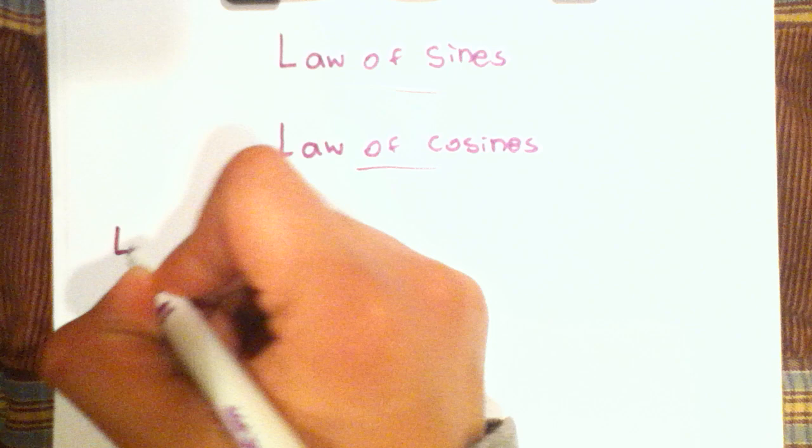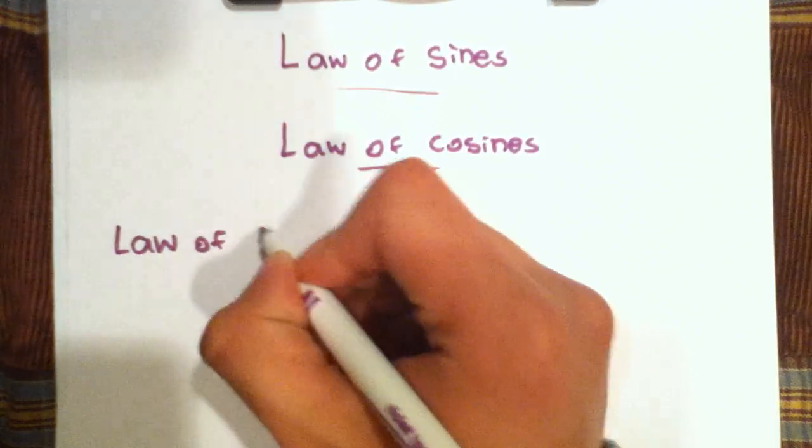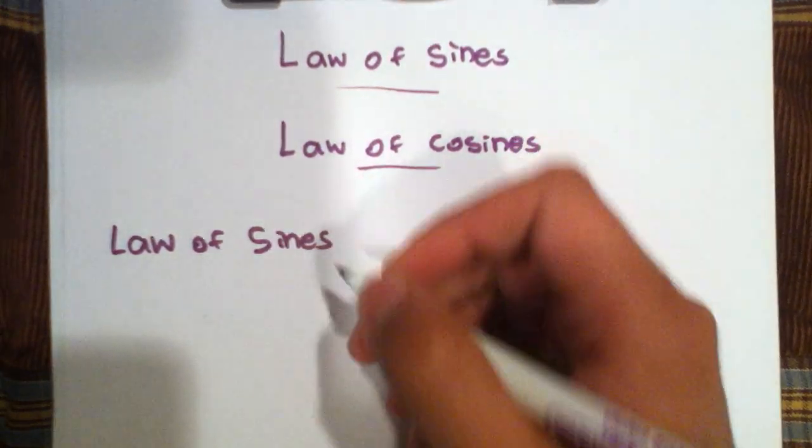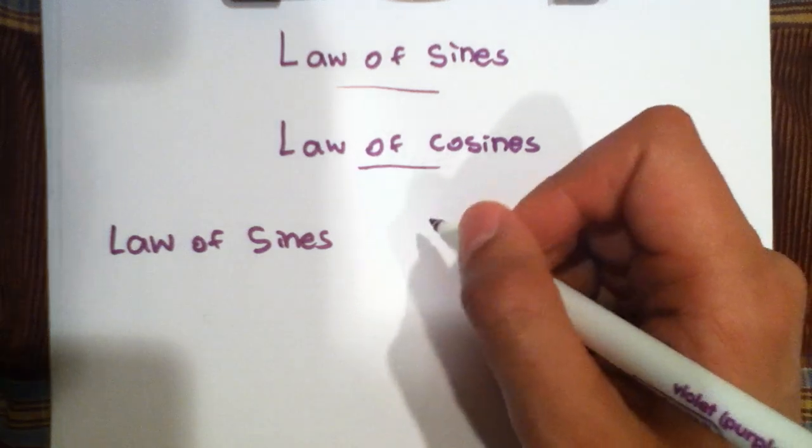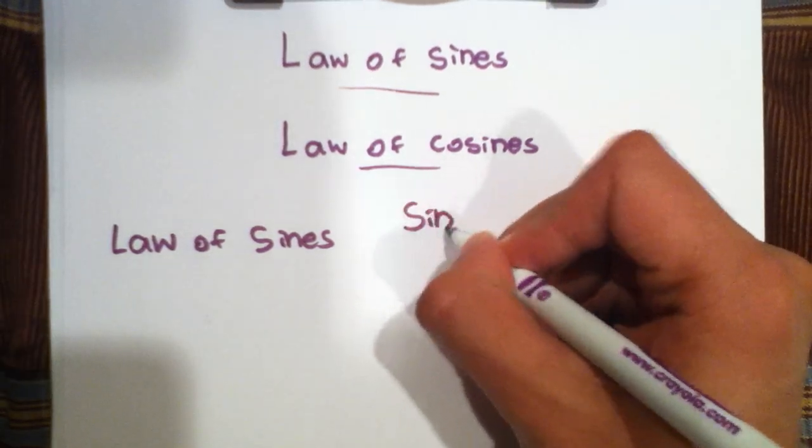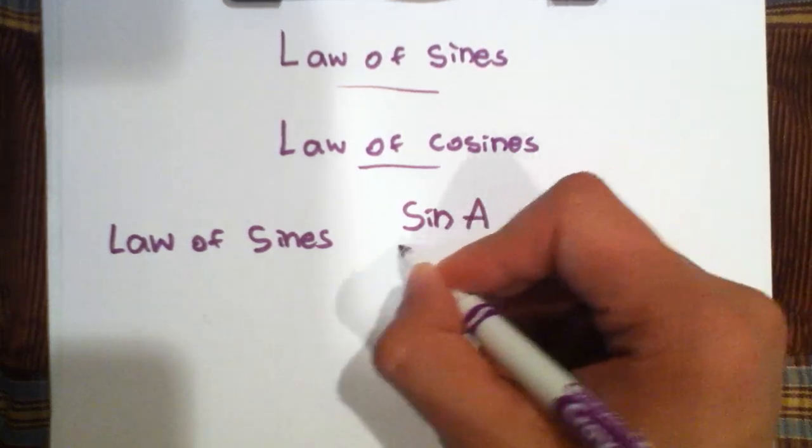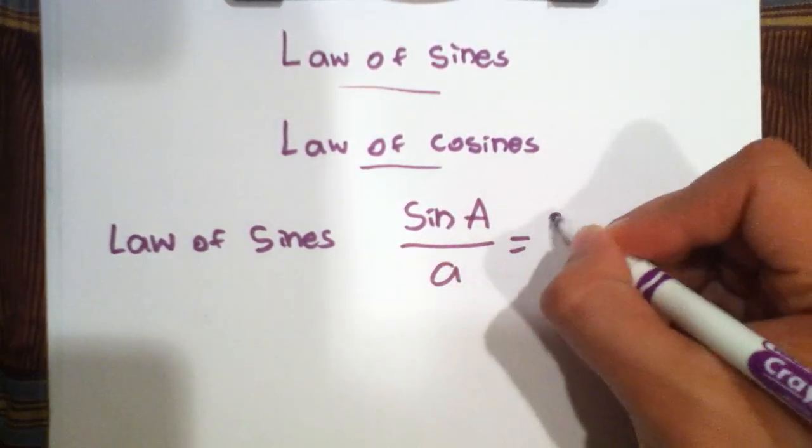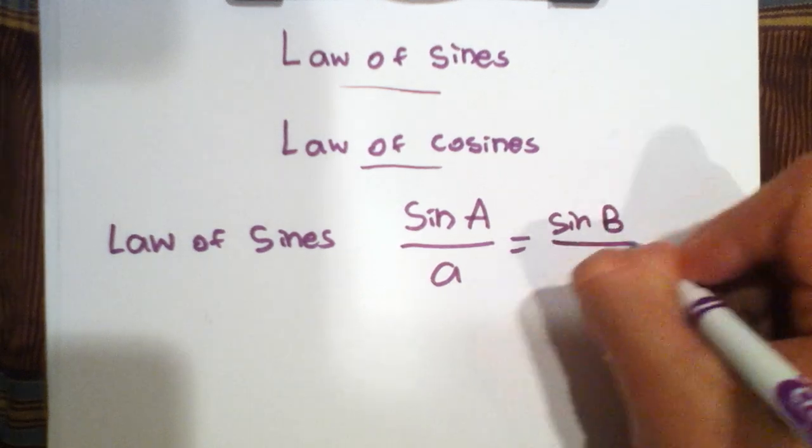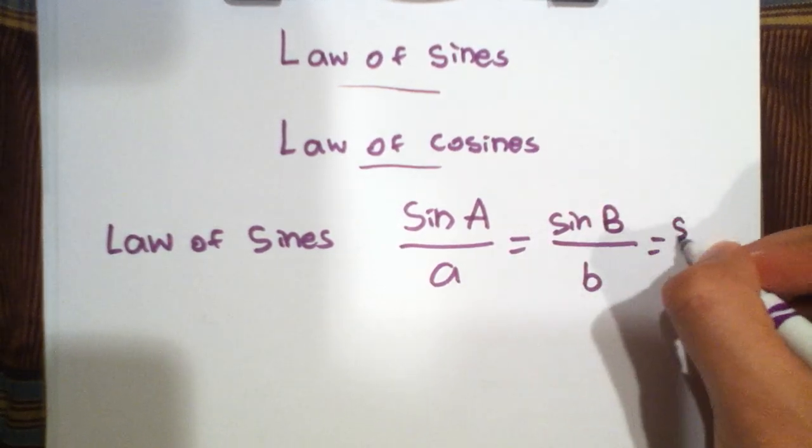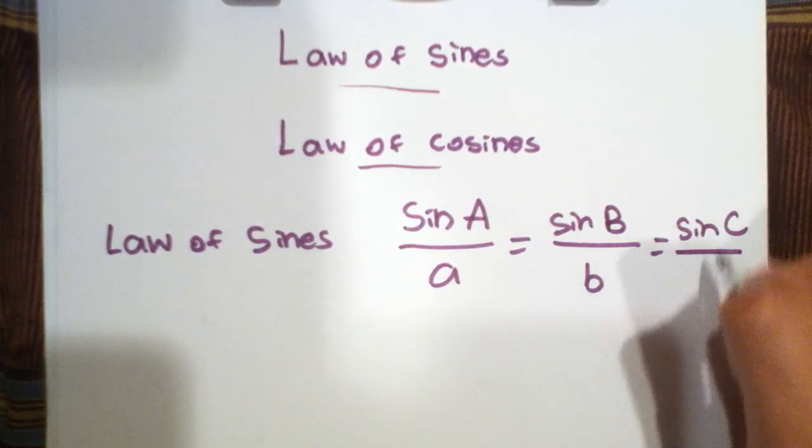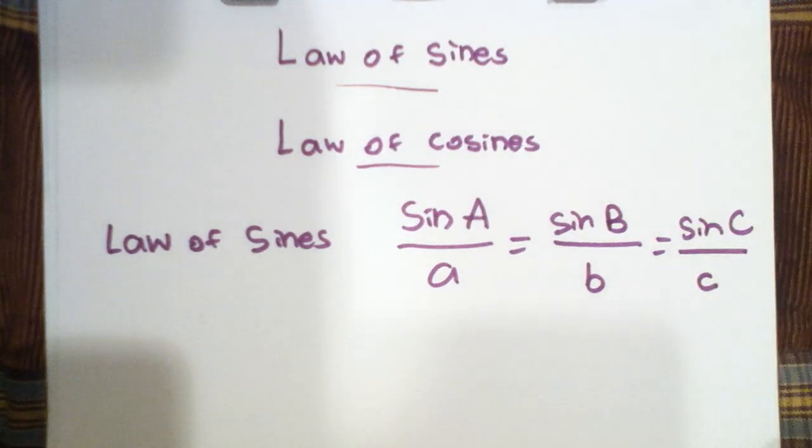The Law of Sines. Let's start out by writing out the equation. It states, sine of A (this is the angle A) over side a is equal to sine angle B over side b is equal to sine angle C over side c.